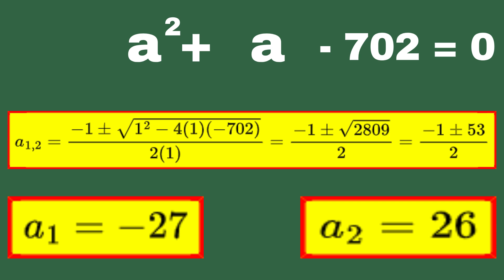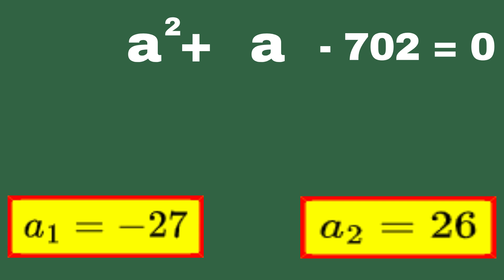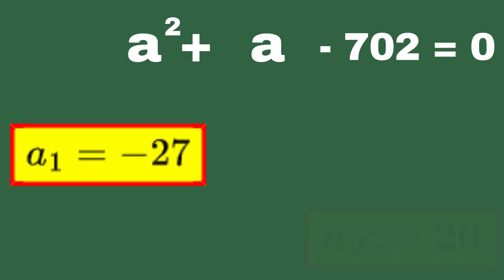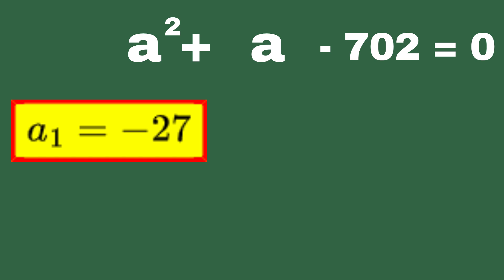So, after going through the steps, we arrive at our two possible solutions, a1 equals minus 27 and a2 equals 26. But wait, remember, the question didn't ask for a, it asked for x. So, we still need to go a step further and solve for x in both cases. We're so close now, let's finish this up.